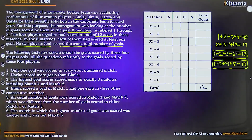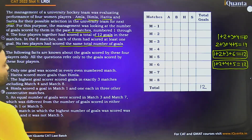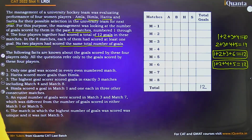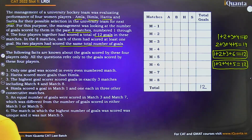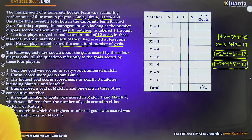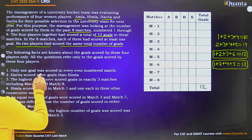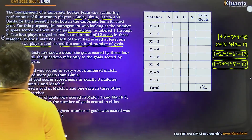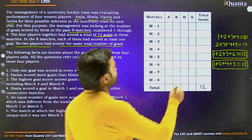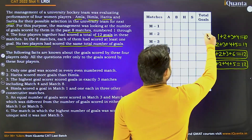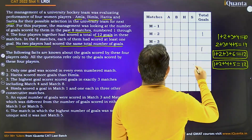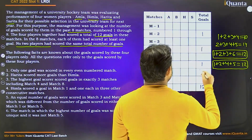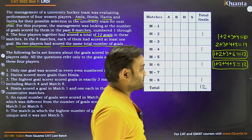The following facts are known about the goals scored by these four players only. All questions refer only to the goals scored by these four players. It says only one goal was scored in every even-numbered match. So match 2: one goal, match 4: one goal, match 6: one goal, match 8: one goal.